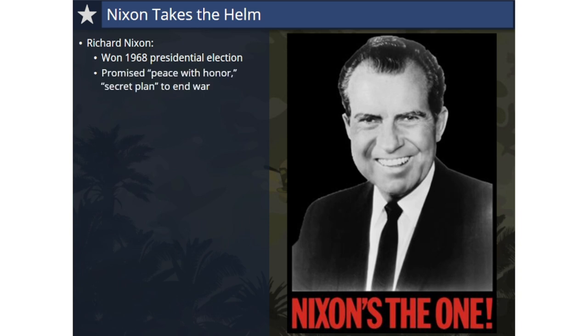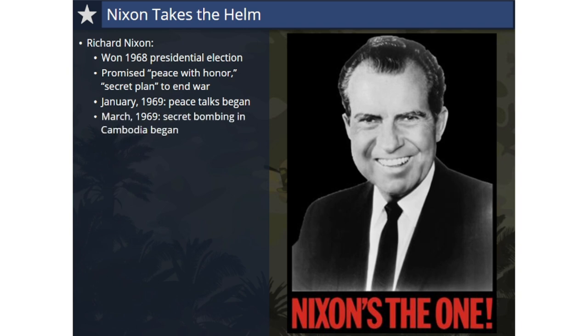During his campaign, Nixon promised the nation to bring peace with honor in Vietnam and stated that he had a secret plan to bring an end to the war. In January 1969, peace talks began, but the war would drag on for four more years. In March 1969, the Nixon administration began a 14-month-long bombing campaign aimed at communist forces using Cambodia as a sanctuary for raids into South Vietnam. When repeatedly questioned by the press if the bombings were taking place, he denied them. The bombings would become public in 1970 and called into question a credibility gap for Nixon.